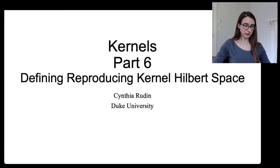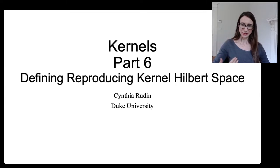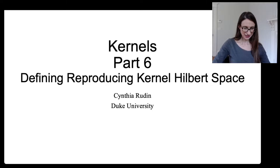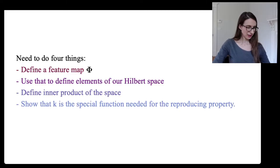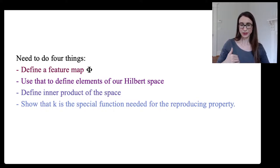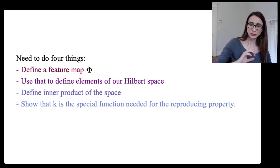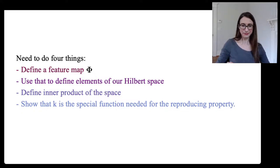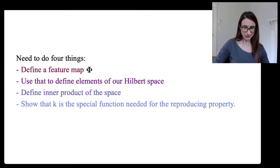Now that we know what a kernel is and what a Hilbert space is, let's officially define reproducing kernel Hilbert space. We need to do four things: define a feature map phi, determine the elements of our Hilbert space from that map, define what it means to do an inner product on them, and then show that k is the special function needed for the reproducing property — and then we have a reproducing kernel Hilbert space.